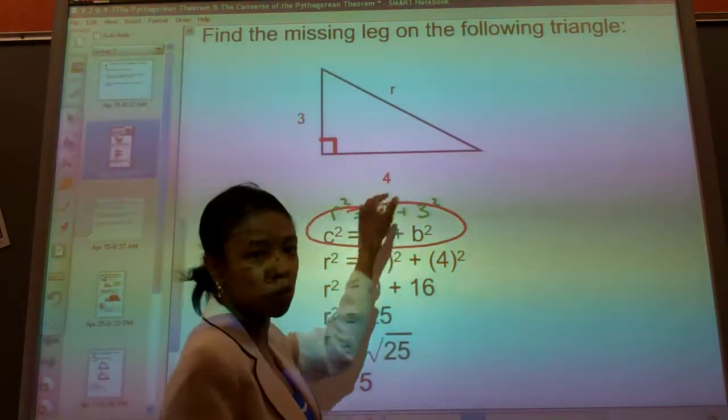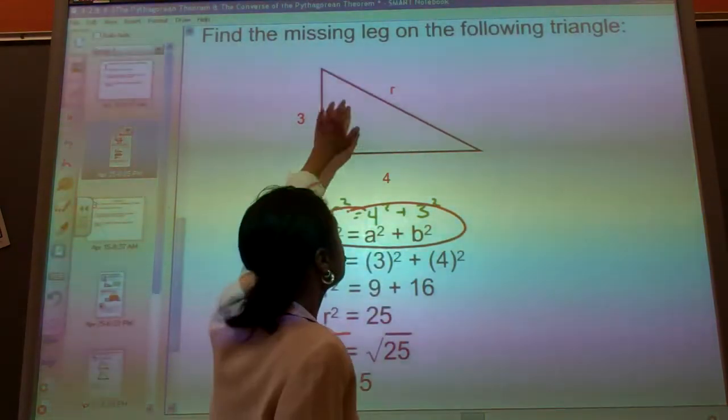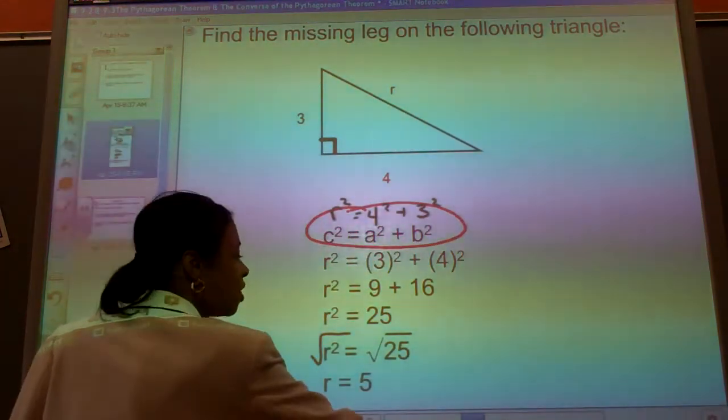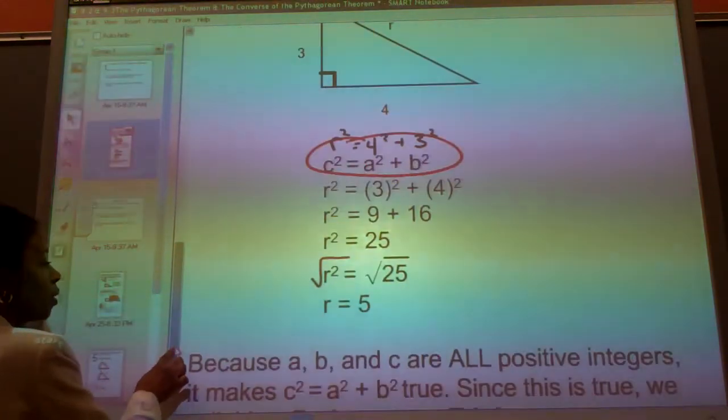It doesn't matter which one you call A, which one you call B. What is important is that you must write the hypotenuse or the longest leg as C. That cannot be changed.